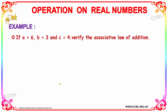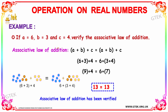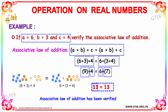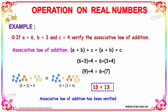Now let's verify the associative law of addition: (a + b) + c = a + (b + c), with a = 6, b = 3, c = 4. Left side: (6 + 3) + 4 = 9 + 4 = 13. Right side: 6 + (3 + 4) = 6 + 7 = 13. Both sides equal 13, so the associative law of addition has been verified.